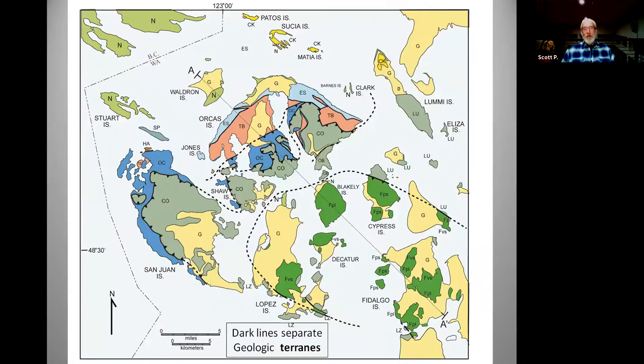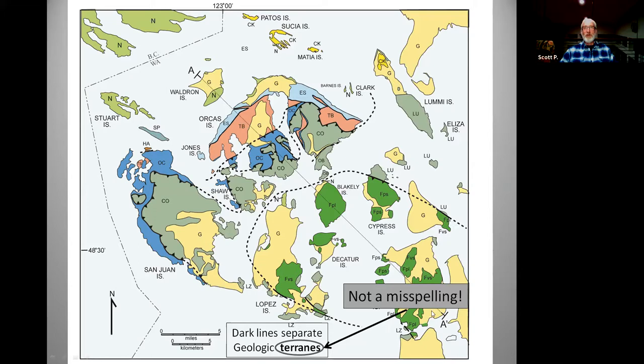Now we can get into the San Juan Islands. Again we have our colors — mostly older rocks in this area and younger rocks up here. Dark lines separate geologic terrains. 'Terrains' is not a misspelling — it's a word geologists use for a package of rocks that share a similar geologic history, very convenient when talking about plate tectonics where different packages of rocks may be transported to different places.